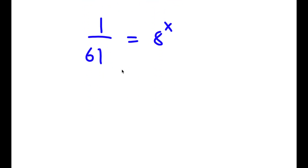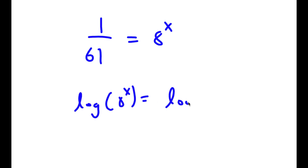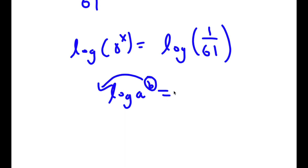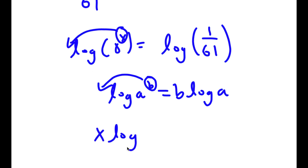To solve this, I'm going to take the log on both sides, so now I have log 8 to the power of x is equal to log of 1 over 61. Before I do that, if I have something in the form log a to the power of b, I can move b to the front, so this is equal to b times log a. So in this case, I have log 8 to the power of x, and I can move x to the front. So now I have x times log 8 is equal to log of 1 over 61.